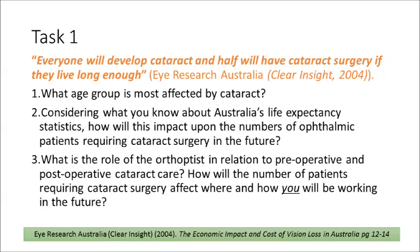For your first task, let's consider cataracts. According to the Eye Research Australia Clear Insight report, everyone will develop cataract and half will have cataract surgery if they live long enough. The forecast is that the need for cataract surgery will double in the next 20 years. Currently about 160,000 cataract operations are performed each year, expected to increase to about 8,000 per million people per year.